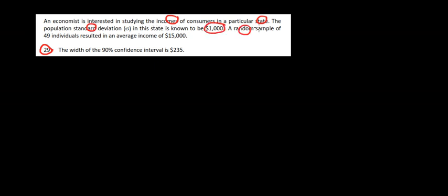Let's have a look at question 29. We want to find out the incomes of consumers in a particular state. The population standard deviation in this state is known to be $1,000. A random sample of 49 individuals resulted in an average income of $15,000.